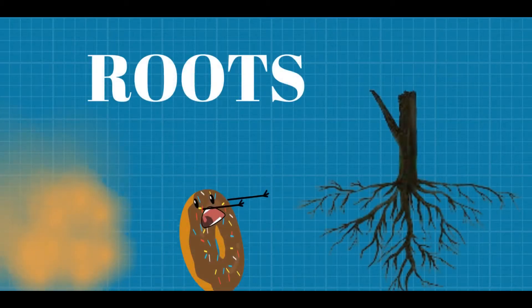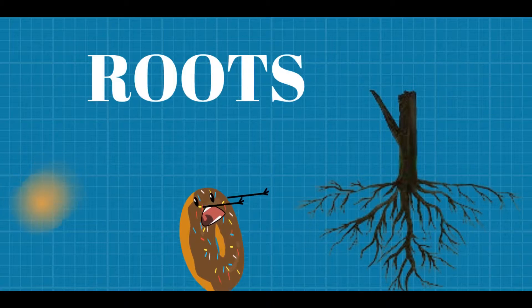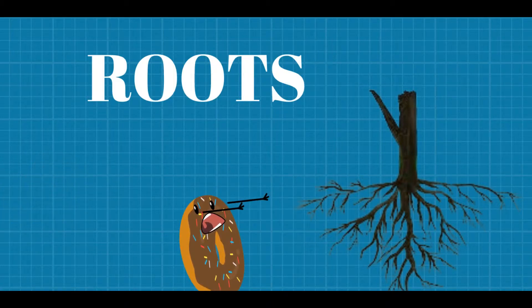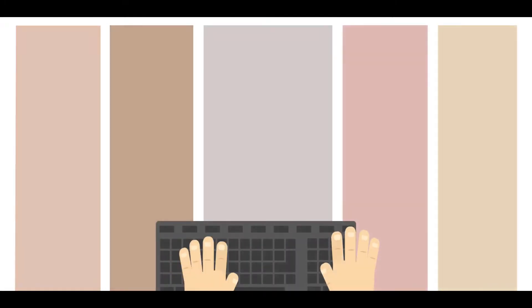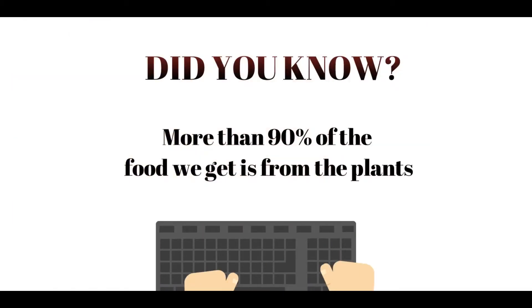And these are the roots. They act like an anchor for the plant, and when it gets windy, they hold the plant upright. Did you know that 90 percent of the food we get is from plants?